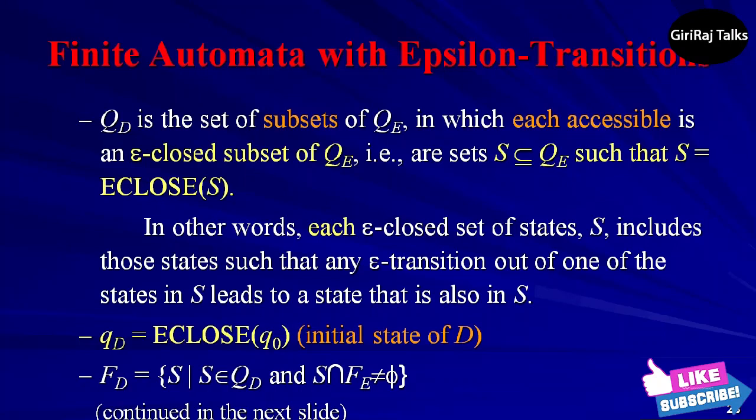Third, FD is those sets of states that contain at least one accepting state of E. That is, FD = {S such that S is in QD and S intersection FE ≠ φ}.